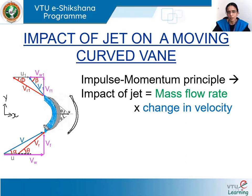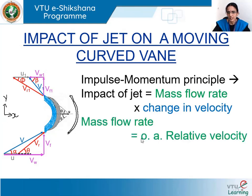When the jet is impinging the vane, the vane is moving to a new position at the rate u meters per second, so the jet has to travel an additional distance to meet the vane. Therefore the mass striking the vane is not equal to the mass coming out from the nozzle — some amount is lost during this additional travel. Therefore the mass flow rate is given by ρA × vr, the relative velocity with which the jet is striking the vane.